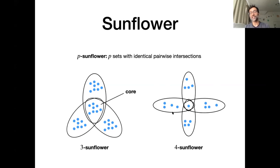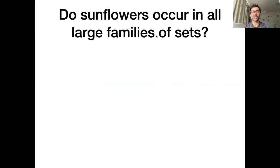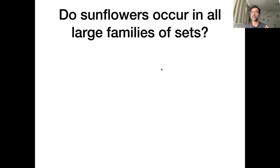The central question first posed by Erdős and Rado is: must every large family of sets contain a sunflower? This is a very fruitful kind of question in combinatorics, in the field called Ramsey theory, where large systems often contain structured substructures inside them. One famous example is Roth's theorem, which says that a dense set of integers must contain an arithmetic progression.